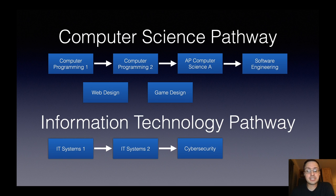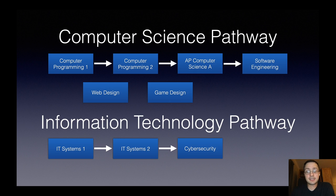We have also recently redone our information technology pathway. That pathway starts with IT Systems 1 and IT Systems 2, which are each one-semester courses, and then transitions to Cyber Security. IT Systems 1 and IT Systems 2 are recommended — not necessarily required — for Cyber Security, but they do provide some important background information.